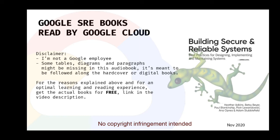Your security response team should use these same assessment methods to triage incidents as they come in. As a first step, they must estimate the potential severity of the attack. When triaging, the engineer assigned to investigate must gather basic facts to help decide whether the escalation is one of the following: an error (i.e., a false positive), an easily correctable problem such as an opportunistic compromise, or a complex and potentially damaging problem such as a targeted compromise.